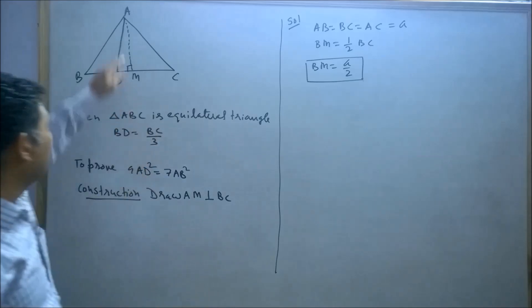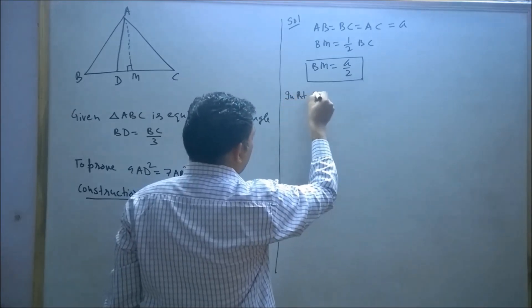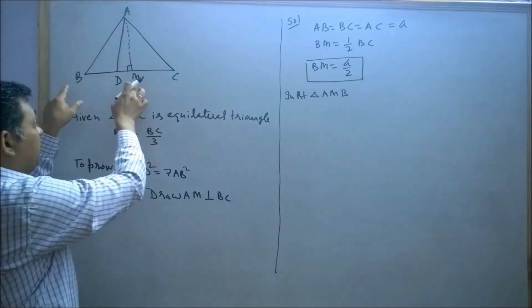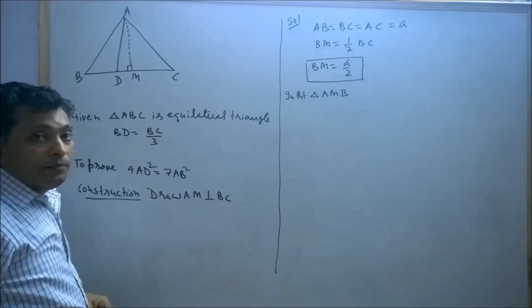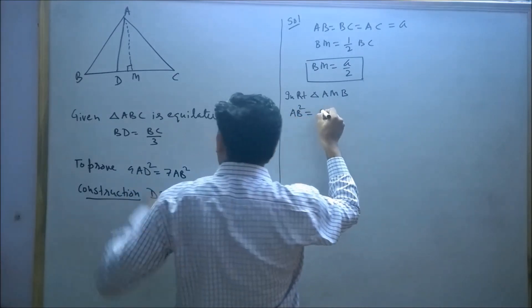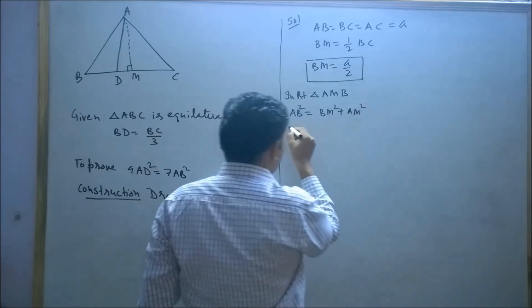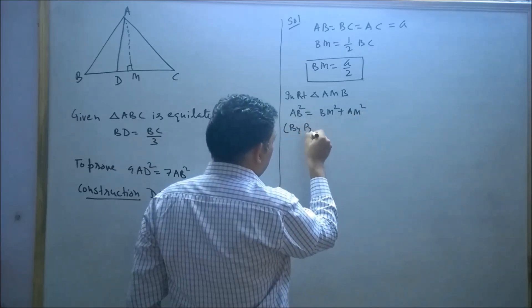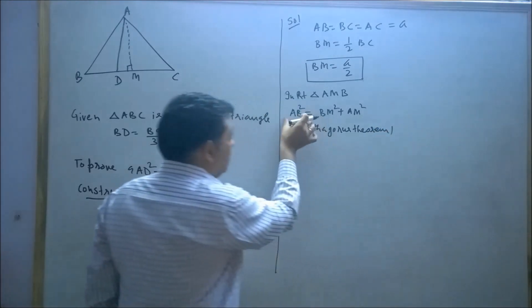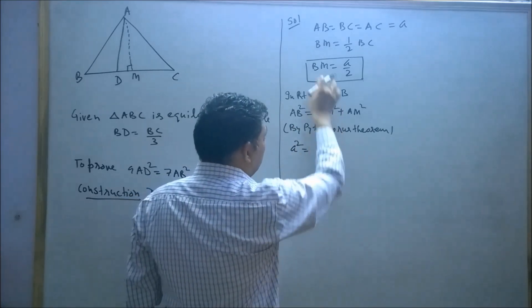Now consider right angle triangle AMB. In right triangle AMB, AB is the hypotenuse and BM is the base. By Pythagorean theorem, square of AB equals square of BM plus square of AM.